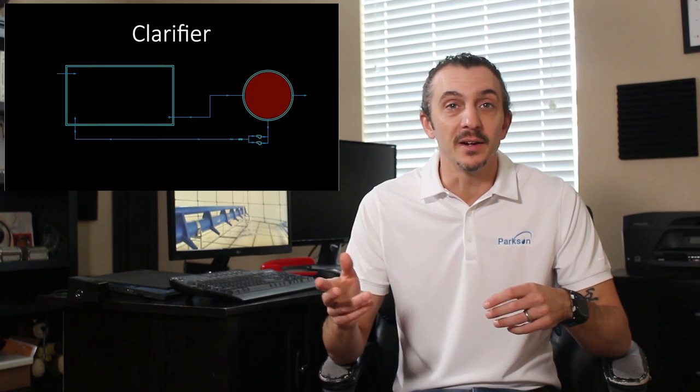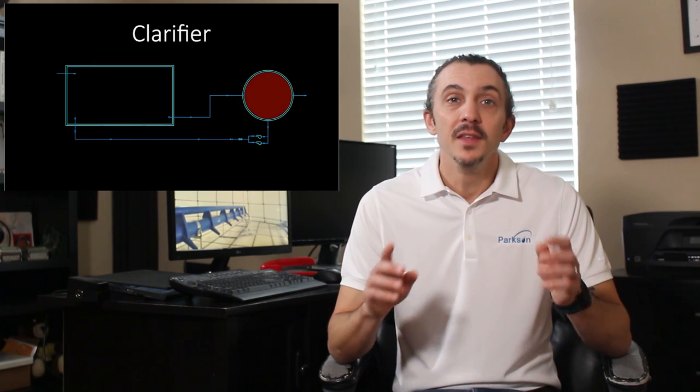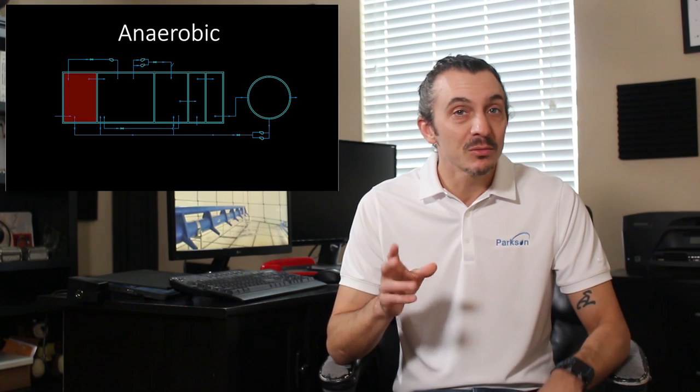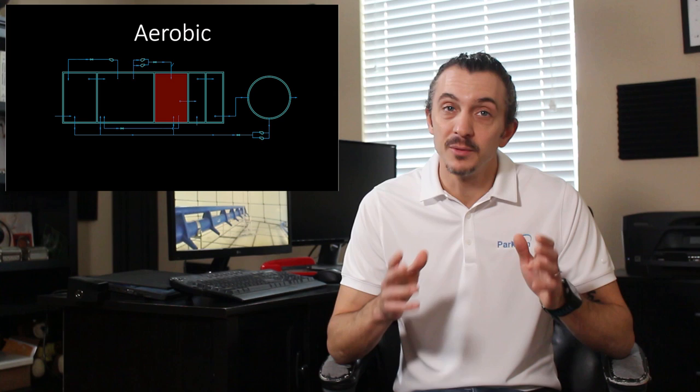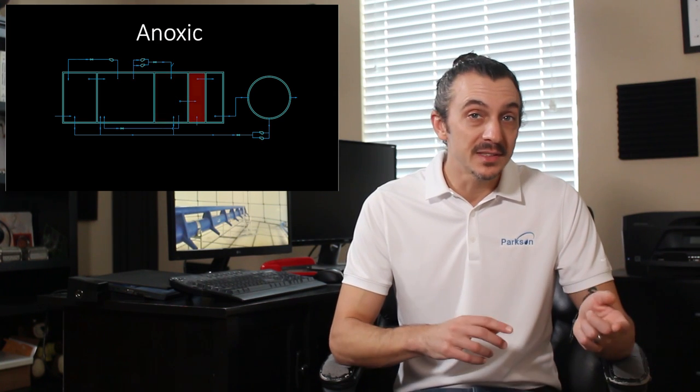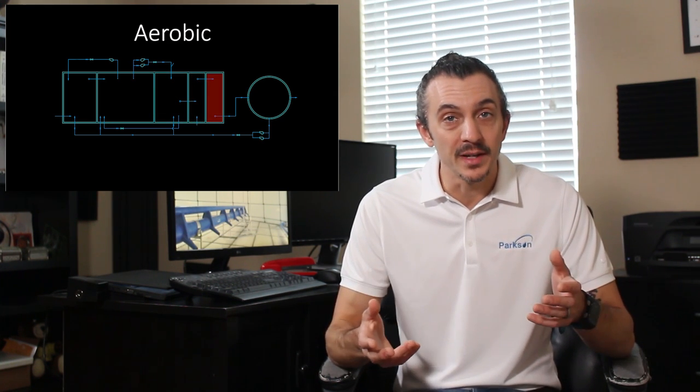Traditionally, each one of these steps is done in a separate tank. In its simplest form, this is a tank with oxygen, known as an aeration tank, followed by a clarifier, which is another tank. This can go all the way up to something like a five-stage Bardenfoe system, with a tank with no oxygen known as an anaerobic tank, then a tank with only non-elemental oxygen known as an anoxic tank, then a tank with good old O2, an aerobic tank, another anoxic tank, and finally another aerobic tank — all followed by a clarifier. Yet another tank. That's a lot of tanks.